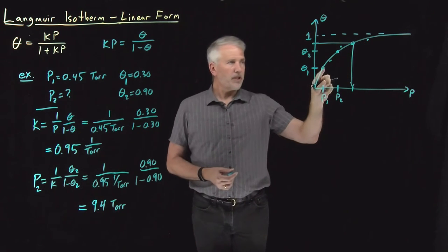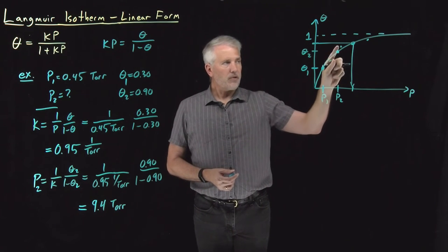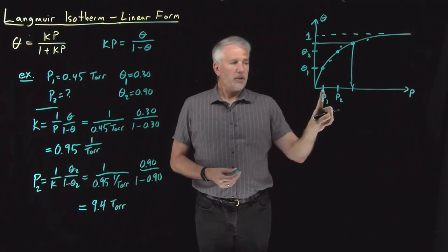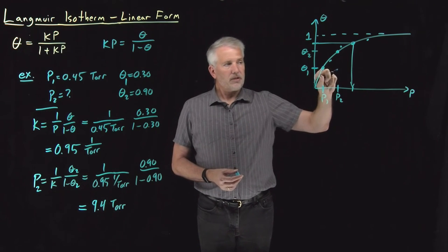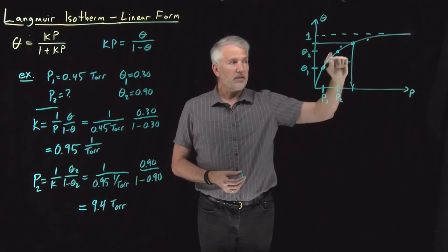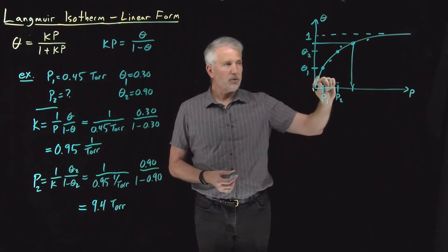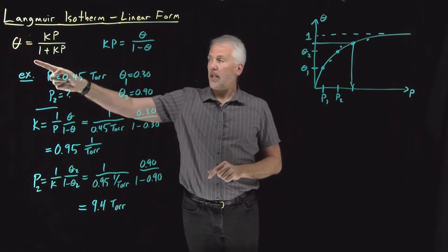And as usual, there'll be some experimental error. Some of these points I've drawn above and below the curve to represent some errors in my either measurement of the pressure or measurement of the surface coverage. So with that error, not all the points will fall on the line, and we're typically interested in saying, okay, what is the isotherm that is the best fit to these points?